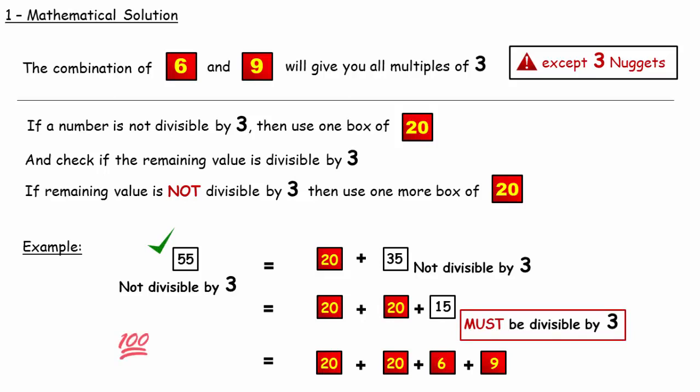It works with 100% surety and here is a reason why it works every time. Any number when divided by 3 can give a remainder of 0, 1 or 2. For example, 15 is divisible by 3. So it gives a remainder of 0.